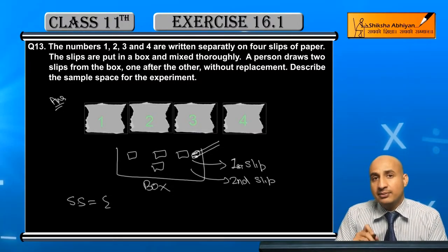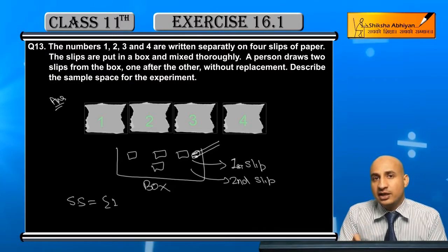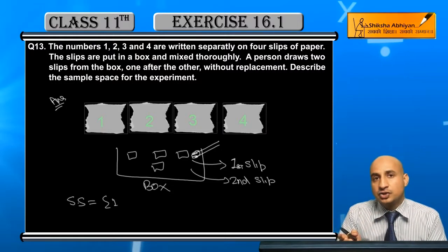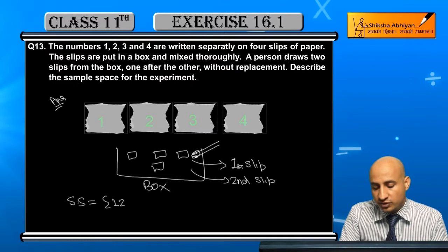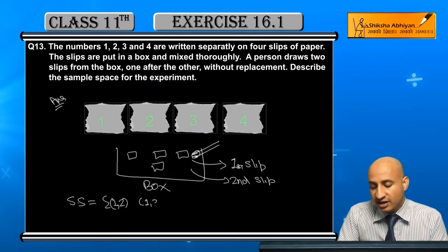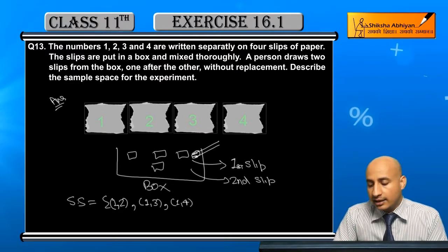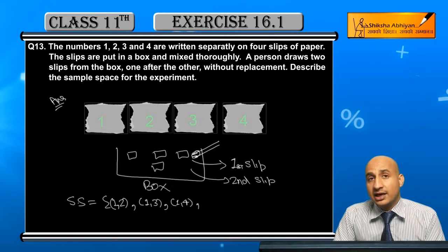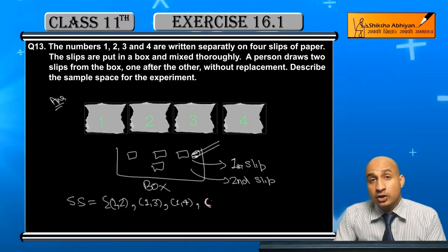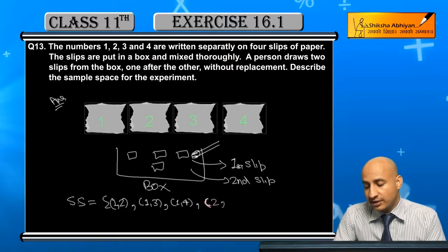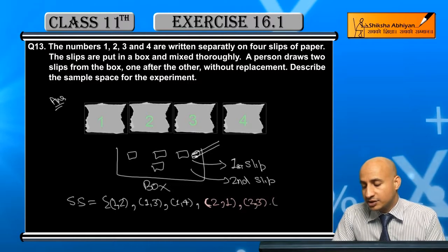After the second slip, I guess the first number one, with it could be two, or with number one could be three, or with number one could be four. But if first time you get number two slip, then second time number one is possible, or number three is possible, or number four is possible.